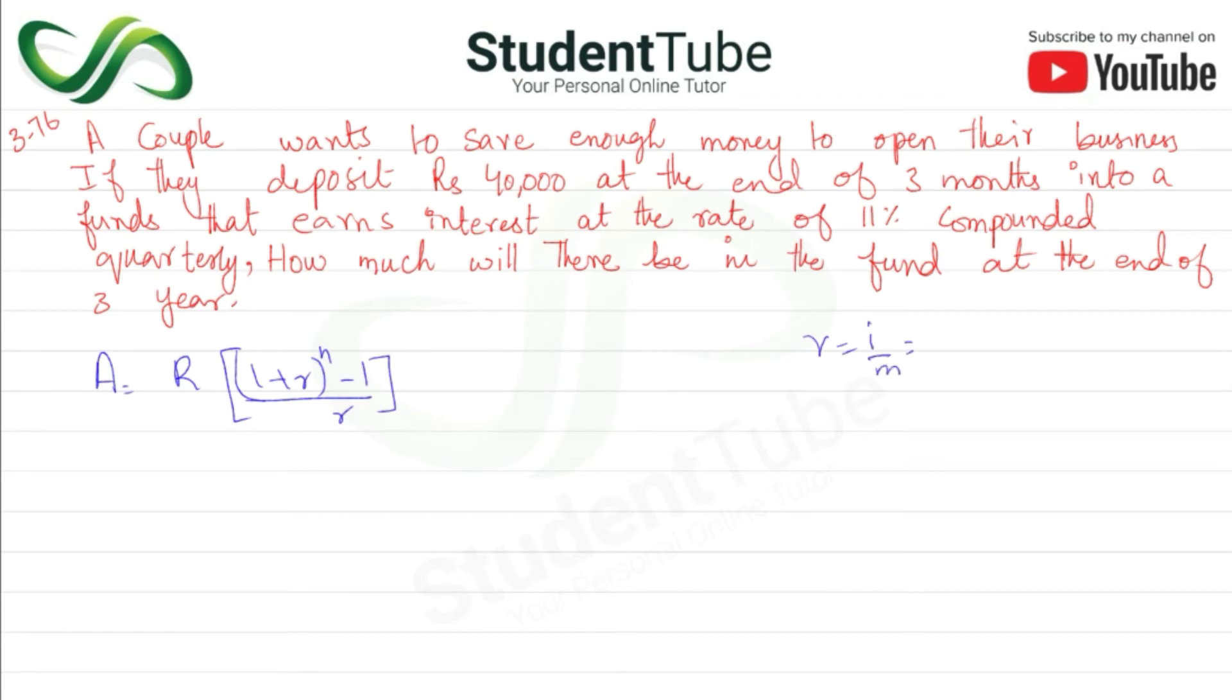r is equal to i upon m. i is 0.11, m is 4. Dividing both gives 0.0275. n is equal to m multiplied by t, so 4 multiplied by 3 equals 12.